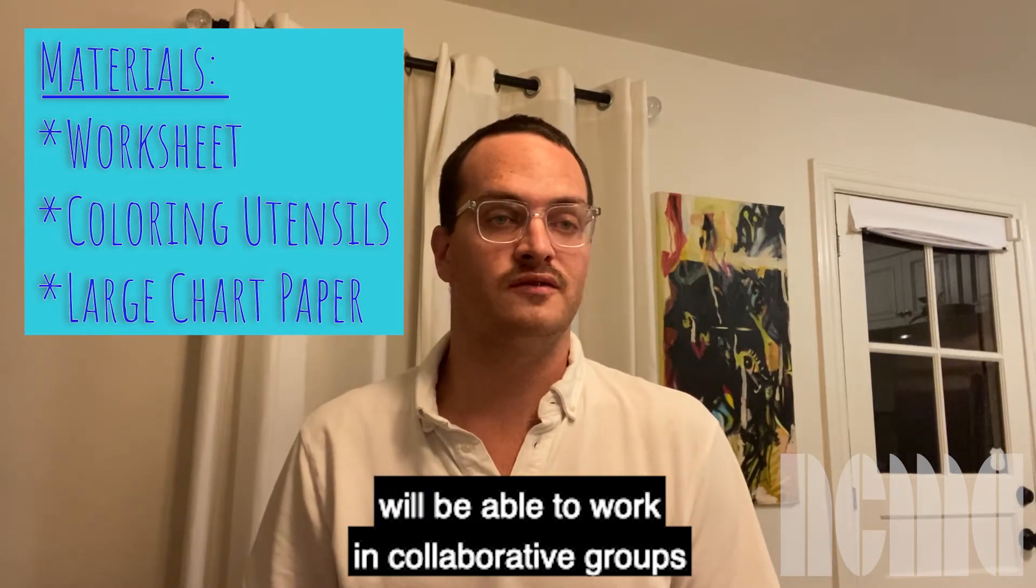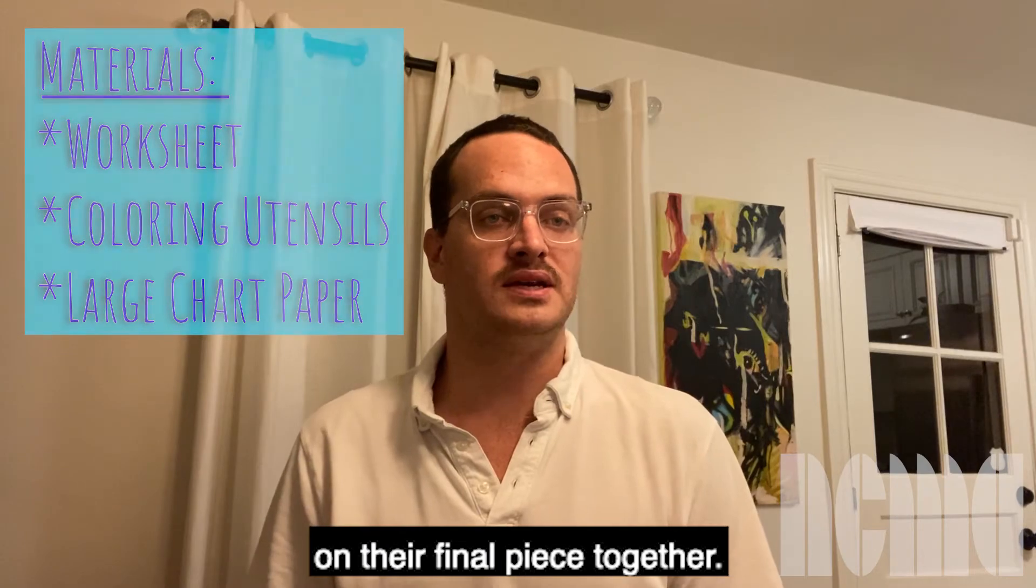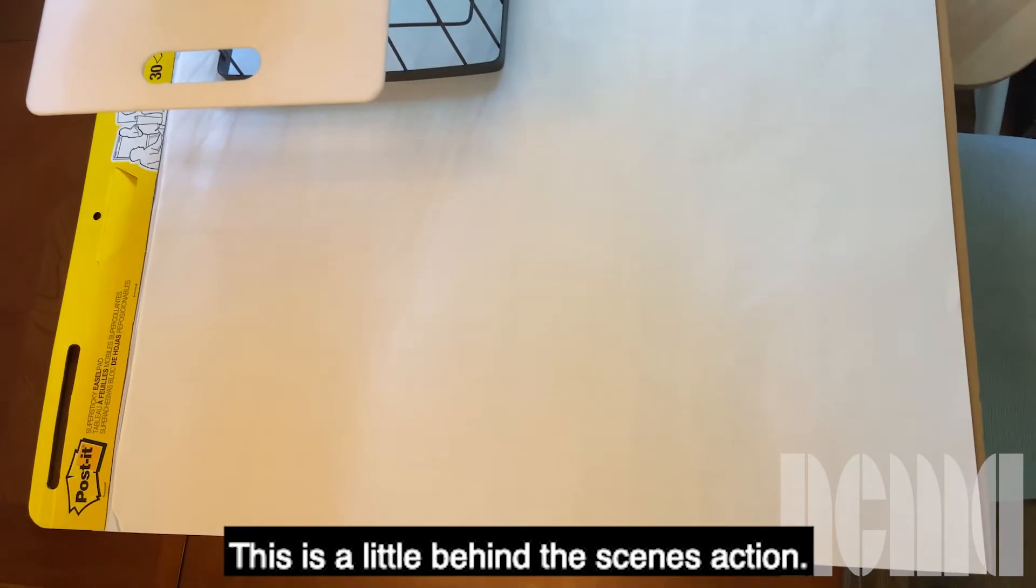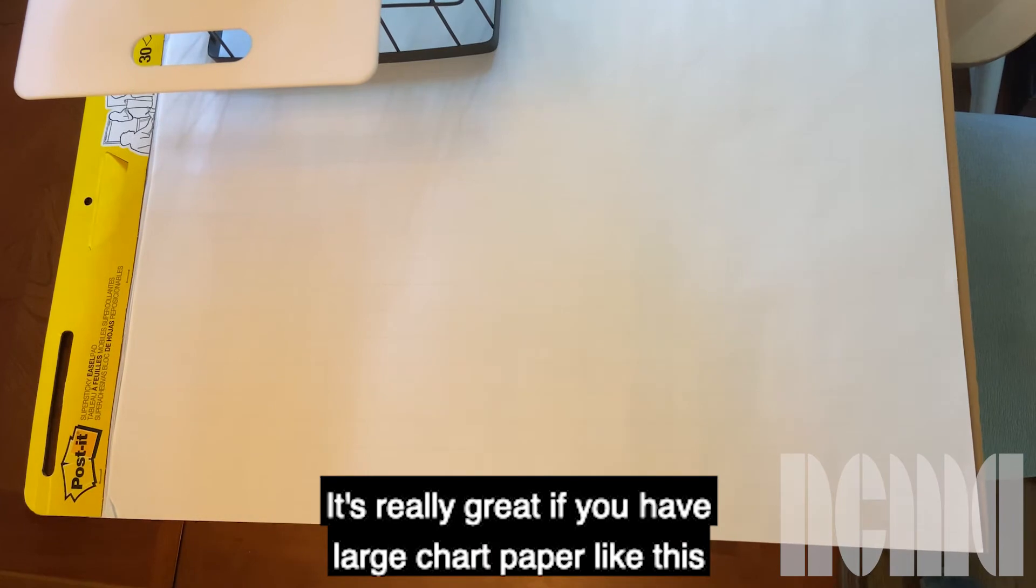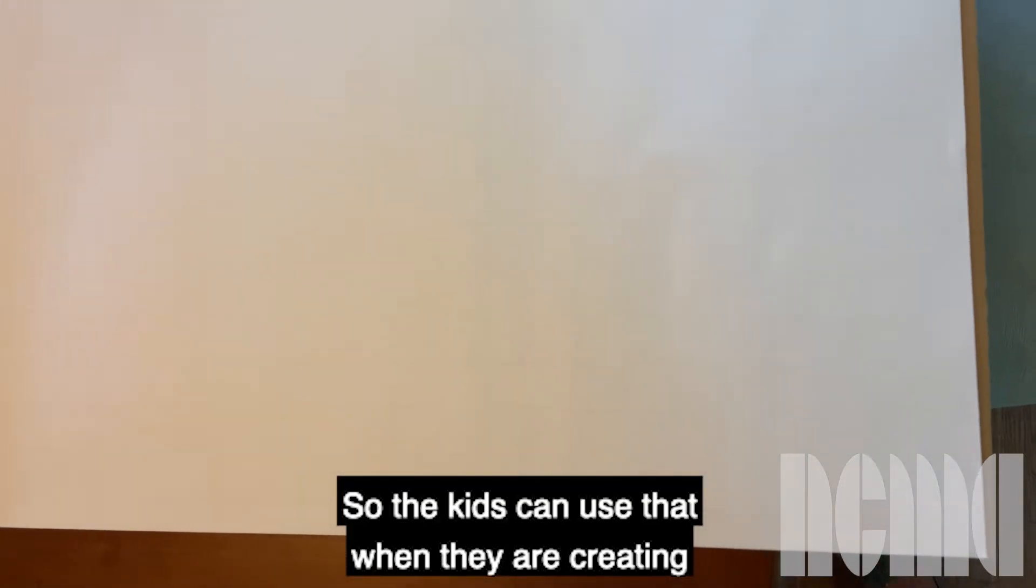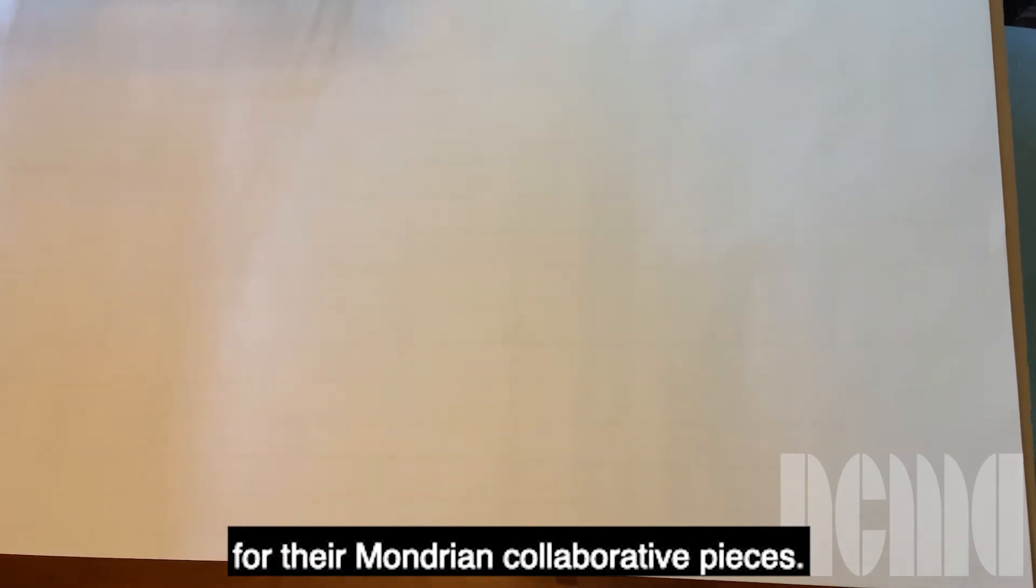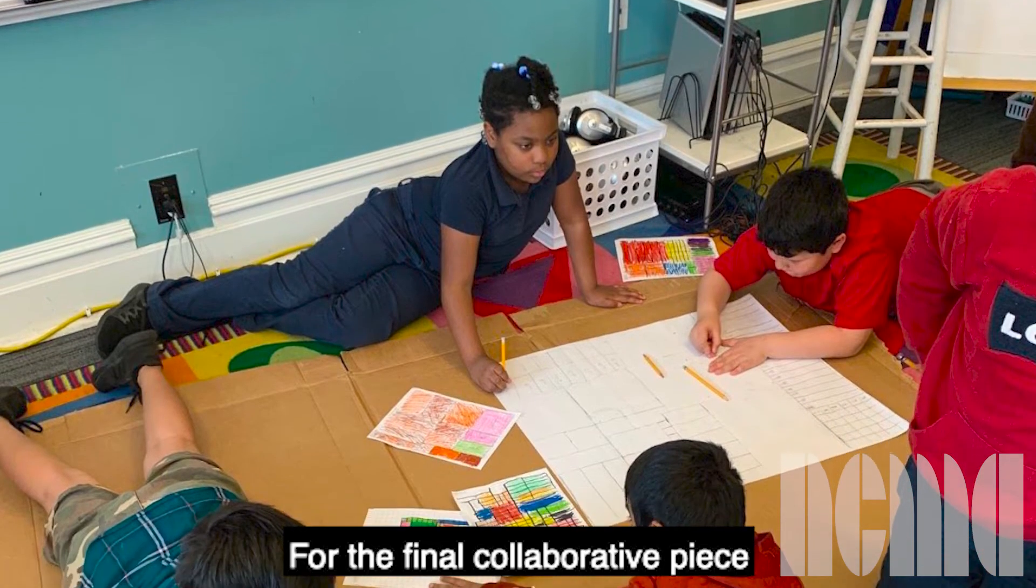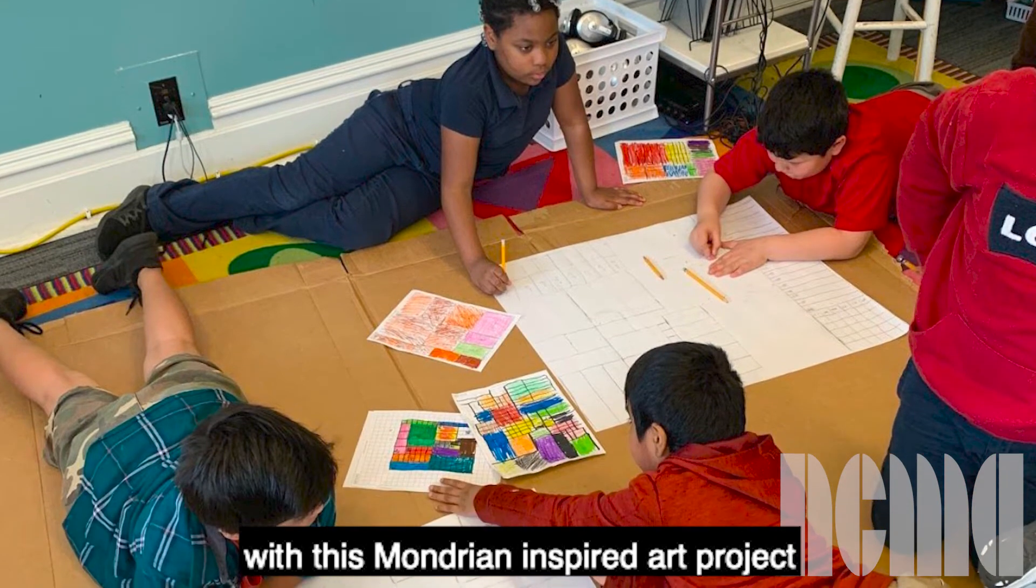This is a little behind the scenes action. It's really great if you have large chart paper like this that actually has graph lines on it so the kids can use that when they are creating their own squares and their own parts for their Mondrian collaborative pieces. So we're going to zoom in a little bit so that you can see what the kids are going to be able to do for the final collaborative piece for this Mondrian inspired art project.